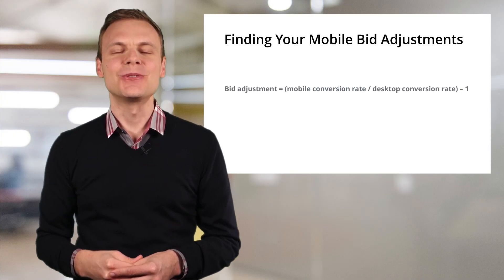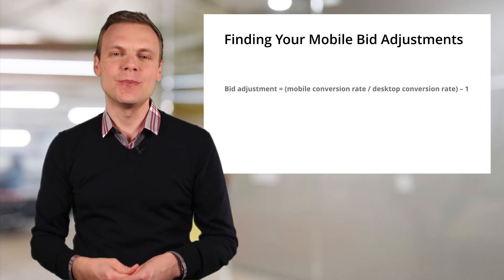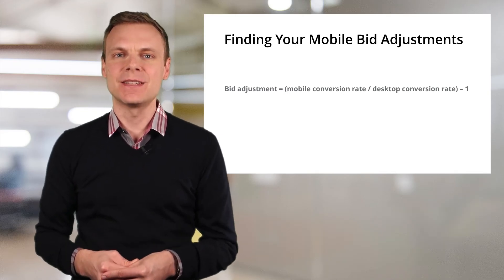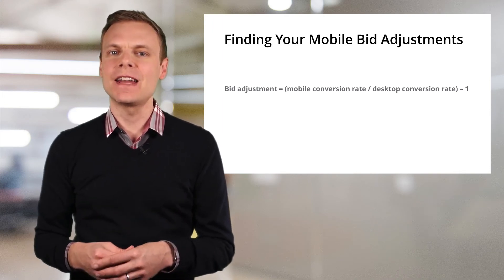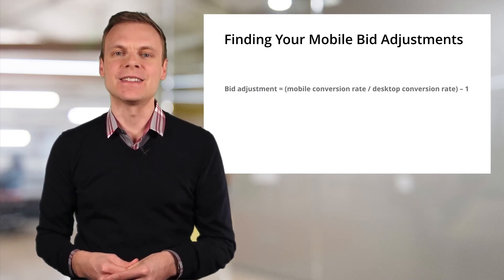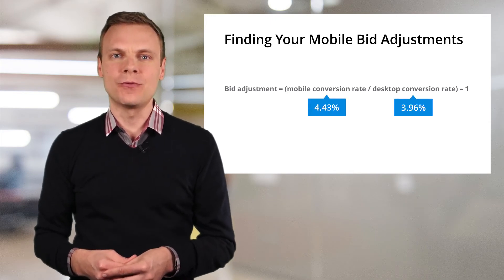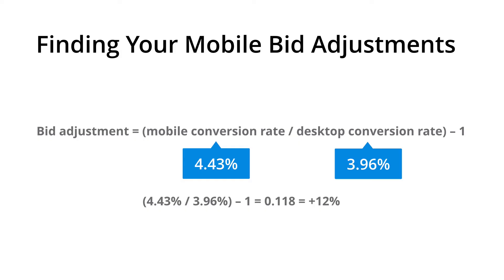Finally, let's look at Google's recommendation for setting mobile bid adjustments. The idea is to increase your mobile bid adjustment if a conversion is more likely on a mobile device, and decrease the bid if a conversion is less likely. So we take our mobile conversion rate, divide it by the desktop conversion rate, and subtract one. For example, if the mobile conversion rate is 4.43% and the desktop conversion rate is 3.96%, since the mobile conversion rate is higher than desktop, we should increase our mobile bids by 12% to account for the difference.